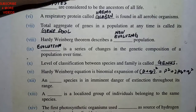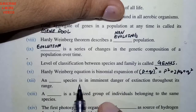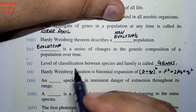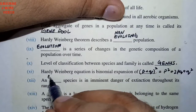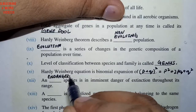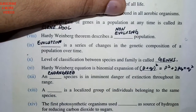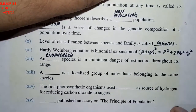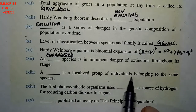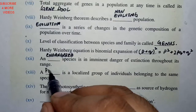After that, a dash species is in imminent danger of extinction — that is the definition of endangered species, those that are at risk. Next, filling the blank: a dash is a localized group of individuals belonging to the same species — that is the definition of population.